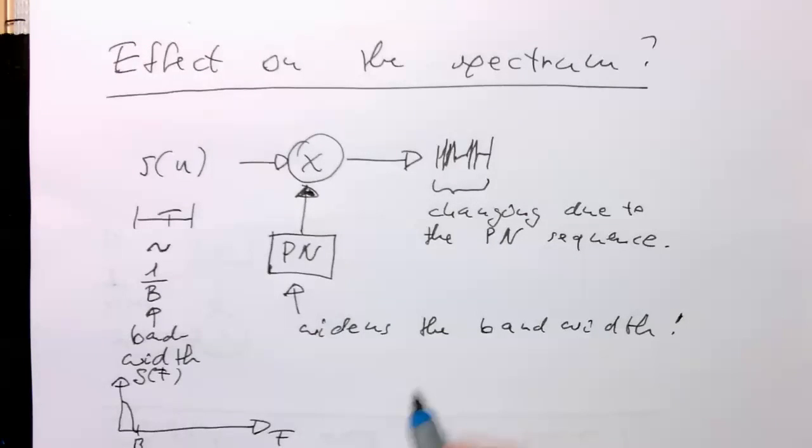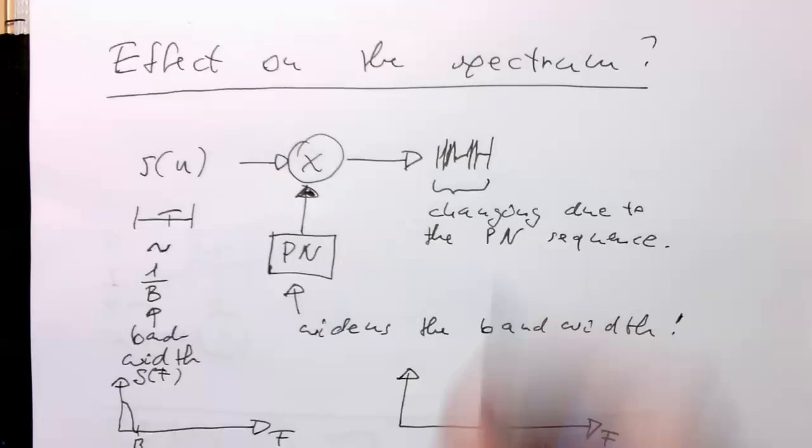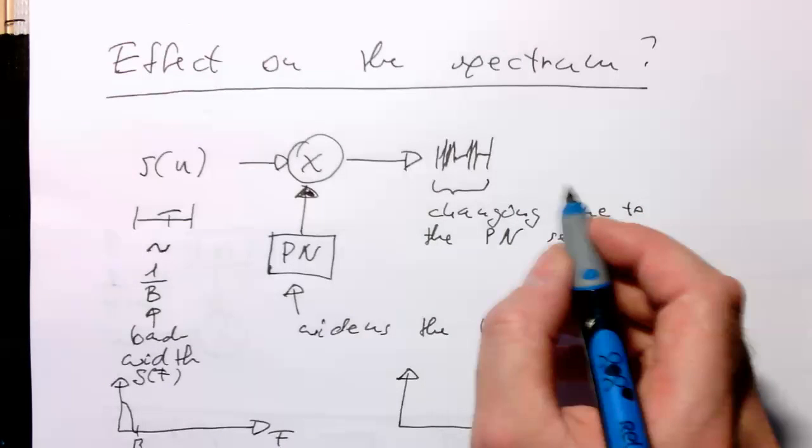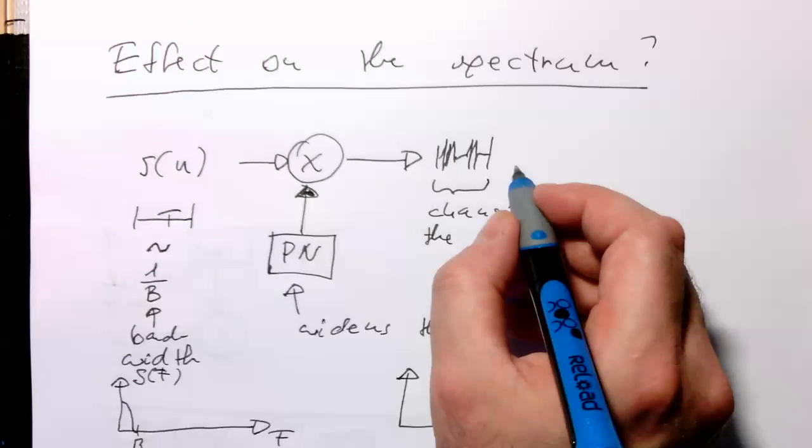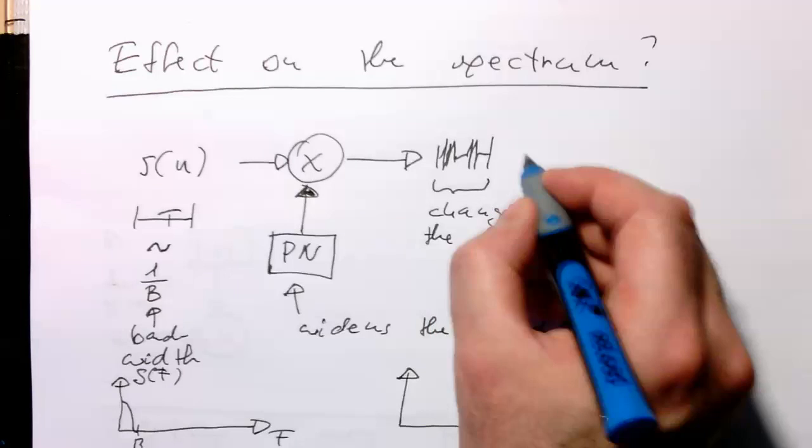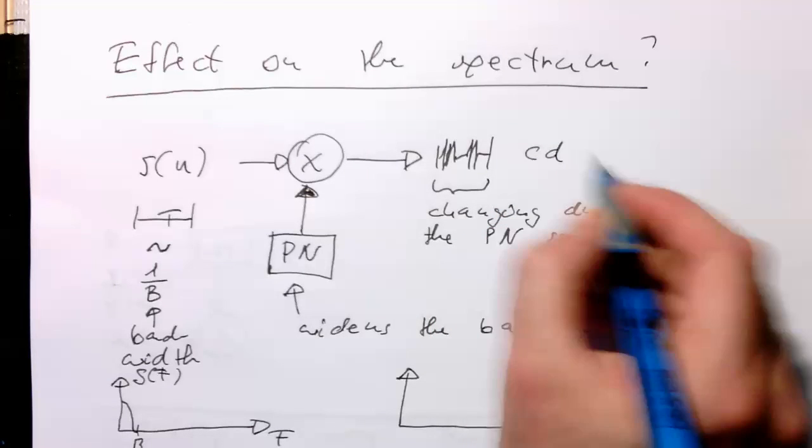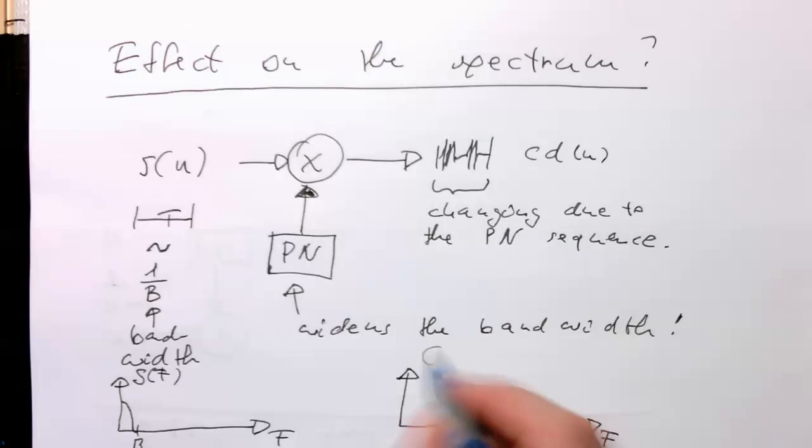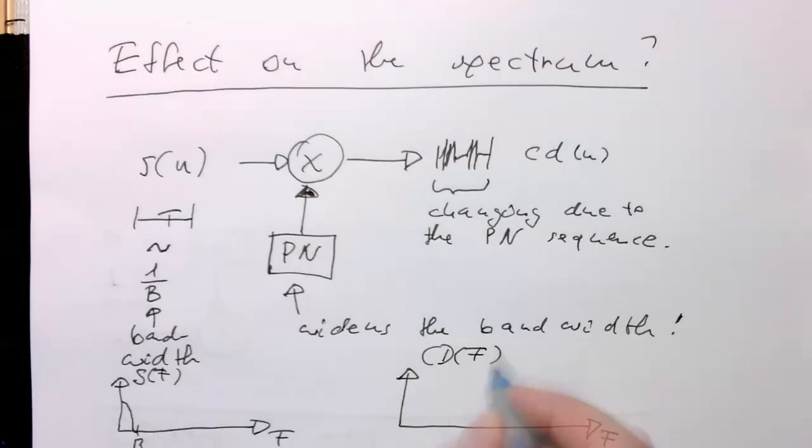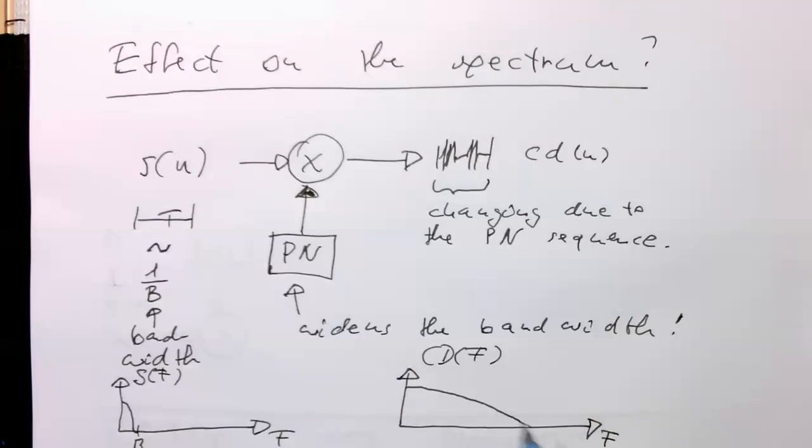Then, at the output here, this bandwidth will be widened. So let's call this here the cd of n. And then through the multiplication here, this will get much, much wider.